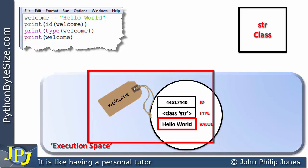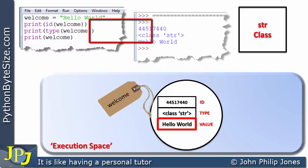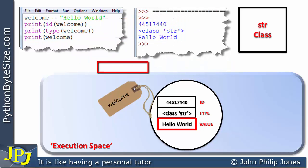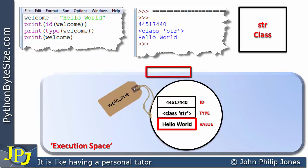We can then print the ID, print the type, and print the value, as shown by these three program statements. When we look at the runtime output, this particular line is responsible for outputting the ID, this line outputs the type, and here we're printing welcome, which prints the value to the screen.